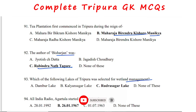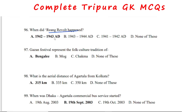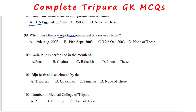The author of Bisharjan was Rabindranath Tagore. Rudrasagar Lake was selected for wetland management. All India Radio Agartala started functioning from 26th January 1967. The swimmer from Tripura who crossed the Palk Strait was Ratiranjandar. The Riang revolt happened between 1942 and 1943. Gajan festival represents the folk culture tradition of the Bengalis.